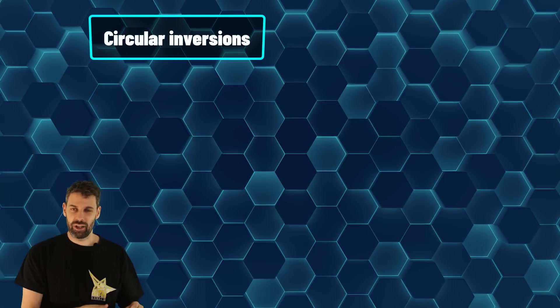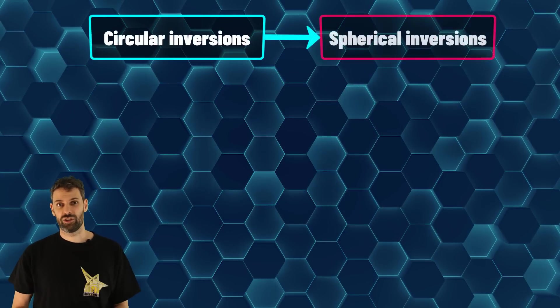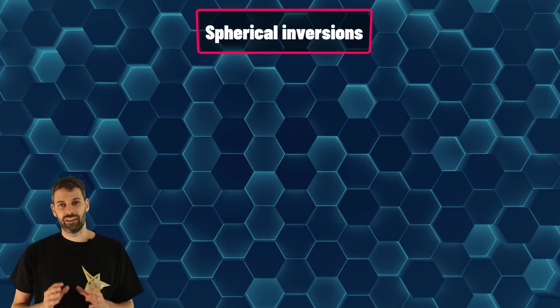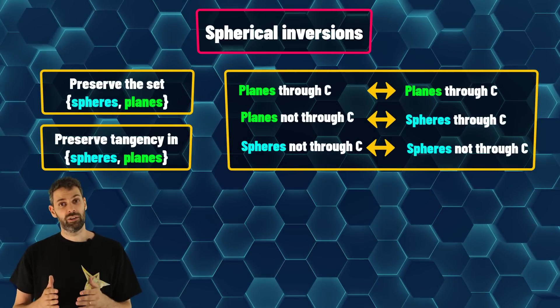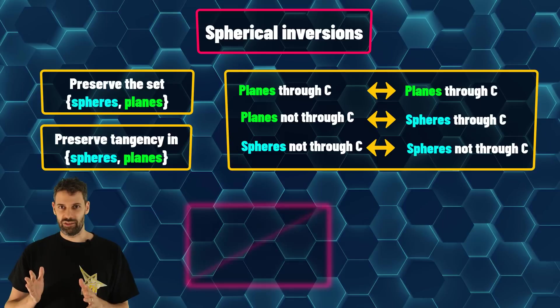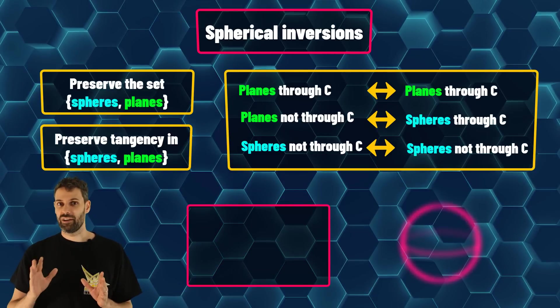However, for our problem, we don't need circular inversion, but spherical inversion. But wait, the same properties hold in this case. You have only to replace lines with planes and circles with spheres.